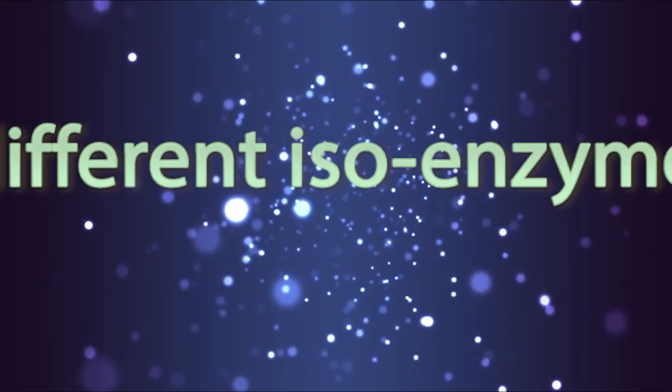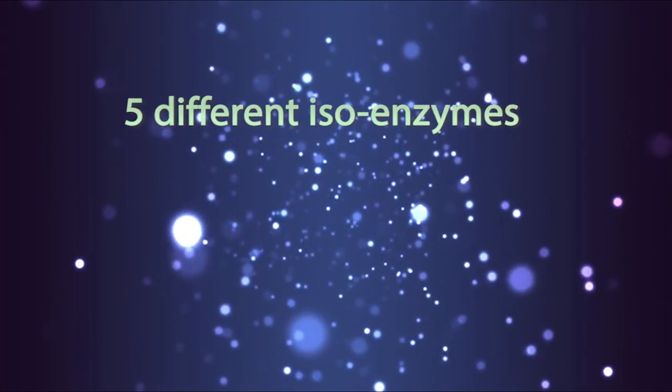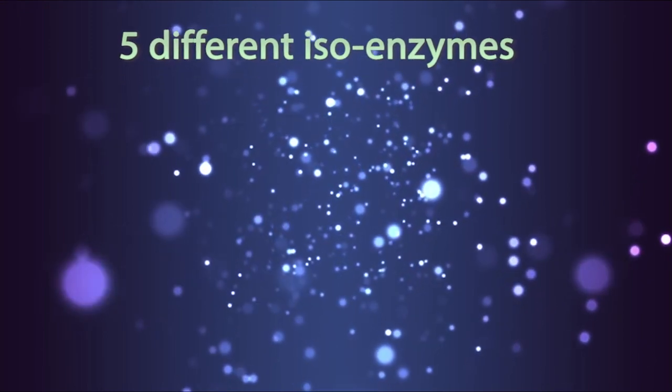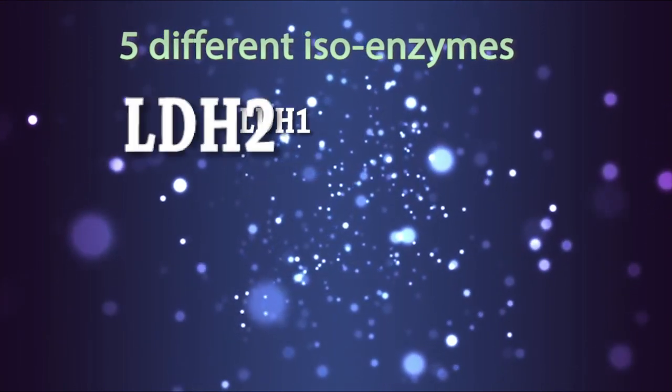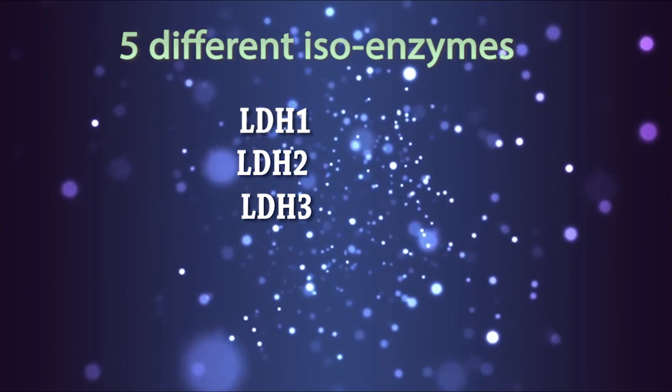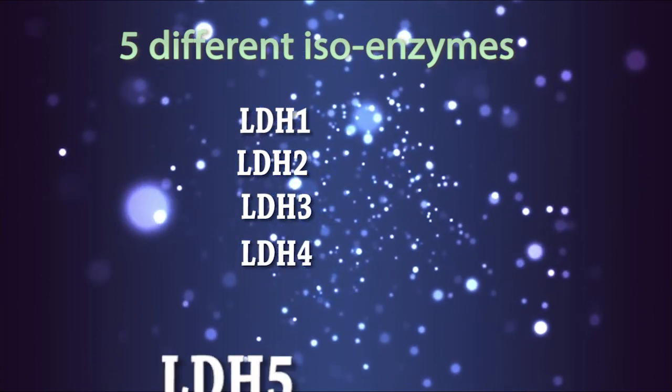Lactate dehydrogenase exists as five different isoenzymes: LDH 1, LDH 2, LDH 3, LDH 4, and LDH 5.